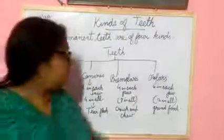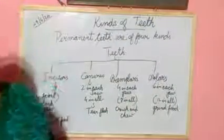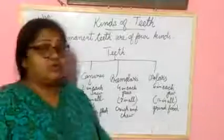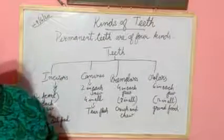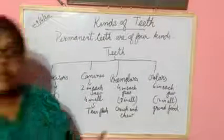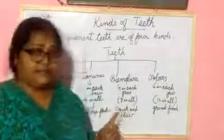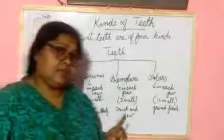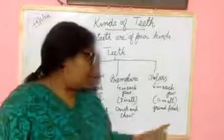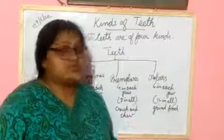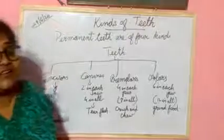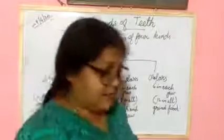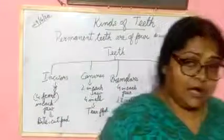Next one is molar. Altogether, how many molar teeth are there? Altogether, twelve molar teeth. Six in upper and six in lower jaw. And it is used to grind the food. It is like a grinder. Understood?